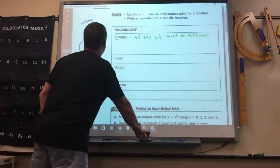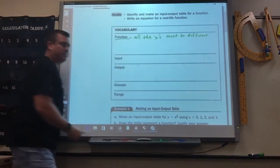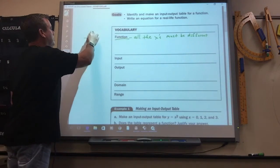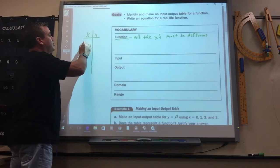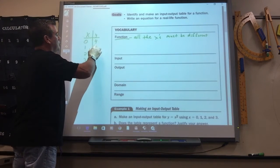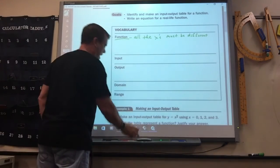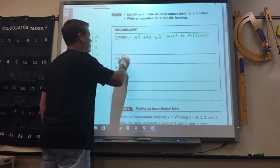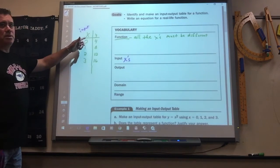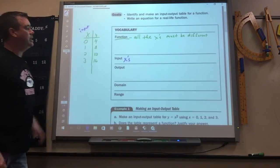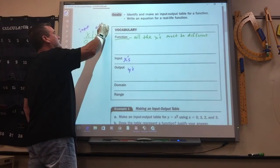Input and output. You started making those in elementary. Remember that? Input-output table. It's called a function table now. Okay, the input is the x's. So this is the input. It's what you put in. You put zero in, one, two, and three. The output is the y's. What you get out.